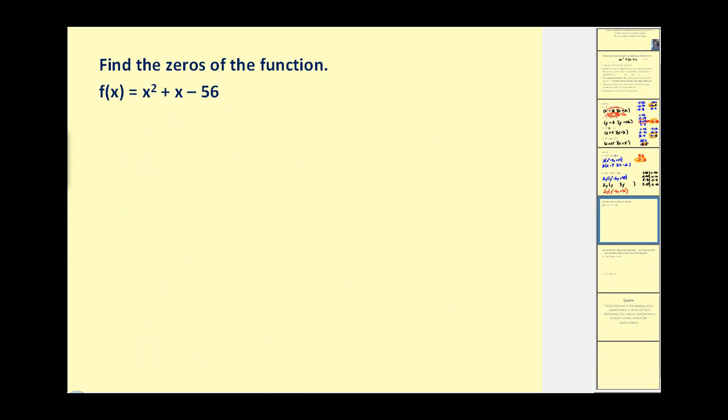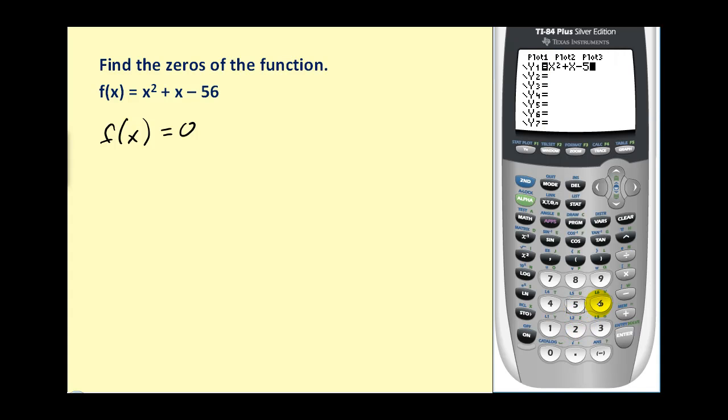Okay, let's also make the connection to finding the zeros of a function. Remember that means determine the x values where f(x) equals zero. Graphically, that would be where we have the x-intercepts. So let's get our graphing calculators out and graph this in y1. Let's press zoom 6 to make sure we have the standard window.